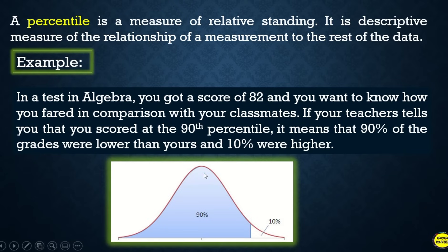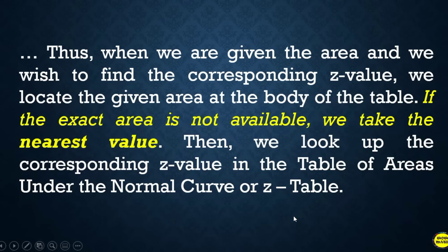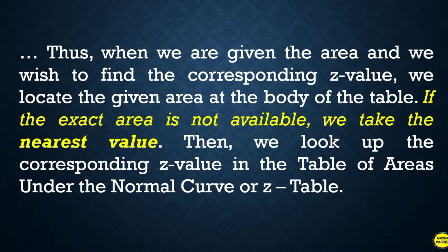On the normal curve graph, the shaded area represents 90 percent and the unshaded portion is 10 percent. Remember that when we are given the area and we wish to find the corresponding z-value, we locate the given area in the body of the z-table. If the exact area is not available, we take the nearest value and look up the corresponding z-value.